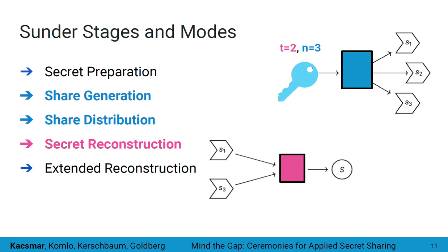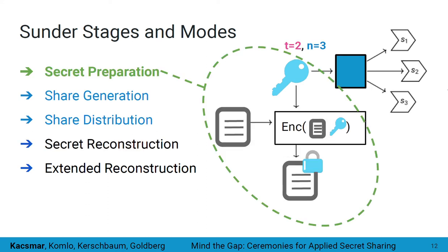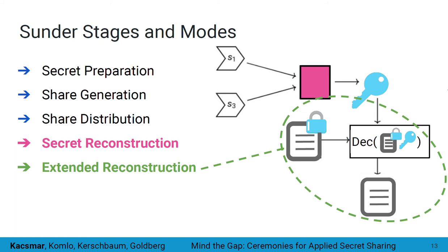Let's look at which stages are included in Sunder. We of course have share generation and secret reconstruction, but we have added a separate share distribution stage that defines how participants receive their shares, distinct from the stage that generated them. Since Sunder also works in extended mode, we include two additional stages. The first is secret preparation, encompassing acquisition of sensitive documents and their encryption — essentially any preprocessing or cleanup not covered by share generation or distribution. The second connects to reconstruction: the extended reconstruction stage encompasses any post-processing needed to retrieve the plain text secret. Thus there are five framework stages for Sunder.